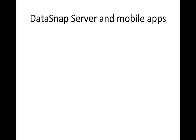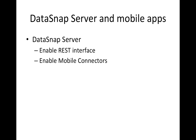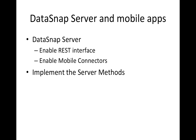In order to allow mobile applications to connect and interact with the business logic on your Datasnap server, there are a few things you need to know. First, you need to enable the REST interface and mobile connectors on your Datasnap server. After that, implement the server methods, which are the business logic on your server side, and generate the proxy classes for one of the platforms supported by the Datasnap connectors.